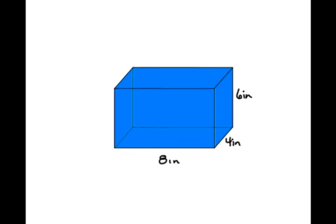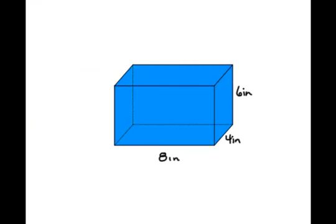Let's put this into practice. We have a rectangular prism. Our surface area formula is ph plus 2B. Remember, p is the perimeter of the base, h is the height, the distance between the two bases, and capital B is the area of the base.